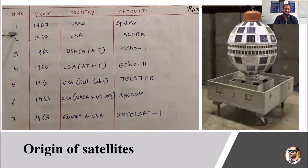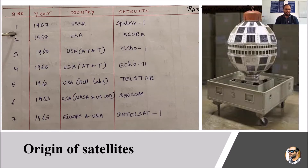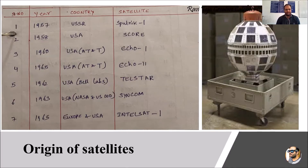Looking at the establishment of satellites along with the countries and years: in 1957 the USSR launched Sputnik 1; in 1958 the USA launched a satellite called Score; in 1960 and 1965, the USA under AT&T launched Echo 1 and Echo 2; in 1962 the USA under Bell Labs launched the Telstar satellite; and in 1963 the USA under NASA launched Intelsat 1.